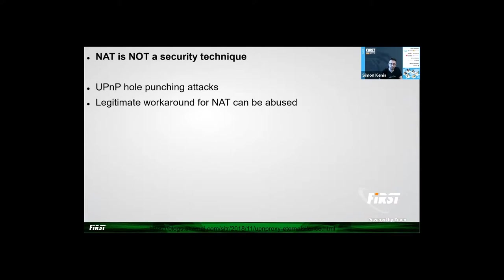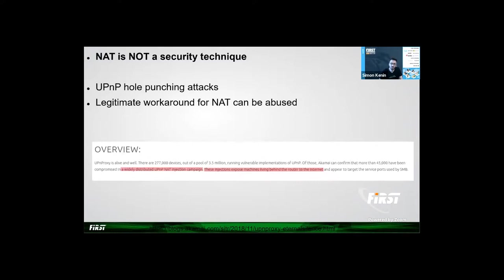Because NAT breaks the end-to-end principle, some applications stop working. Different techniques are introduced to overcome these issues. UPnP is one of those. ECMI published research in 2018 about a campaign that exposes SMB ports on machines behind NAT to exploit the EternalBlue vulnerability. A subscriber inside the CGN can do the same — except it won't expose the ports to the public internet; it will expose them to the CGN private IPv4 address space. These kinds of attacks are also called hole-punching attacks. CGN deployments might be vulnerable to similar attacks, and with double-punching the ports, it might be possible to expose those machines to the public internet eventually.